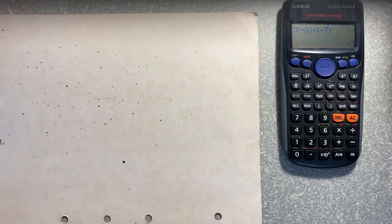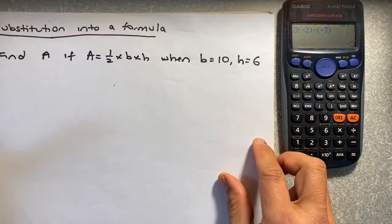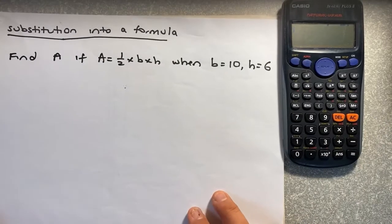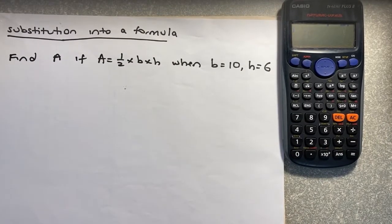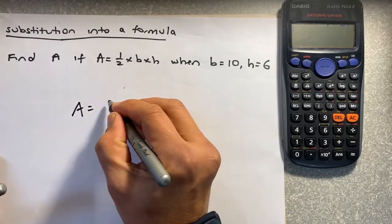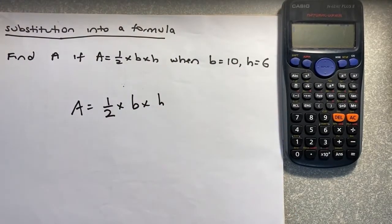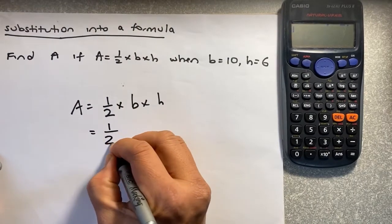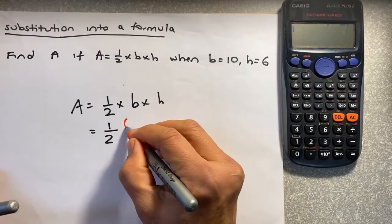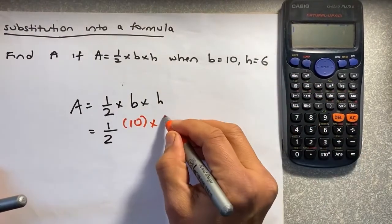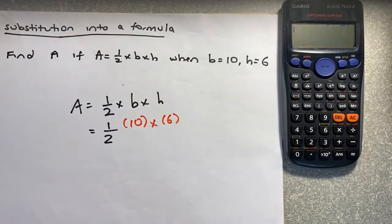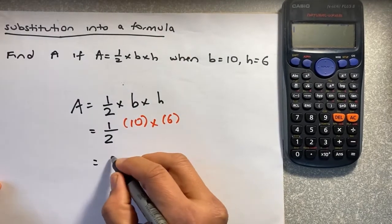Now we shall do substitution into a formula, which we have done in many math questions. For example, if you have the area of a triangle, which is half base times height, and you know the base is 10 and the height is 6, you want to find the area of a triangle. So you put the formula A equals half times base times height. Now we are going to replace the base with 10 and the height with 6. Put it in brackets and into your calculator, and the answer should give you 30 cm².